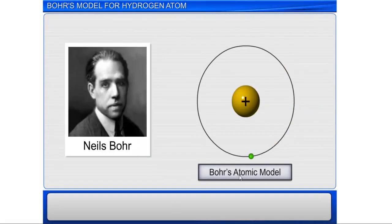In 1913, Niels Bohr proposed an atomic model that quantitatively explained the features of the structure of hydrogen atom and its spectrum.